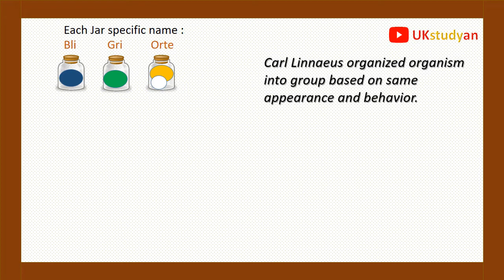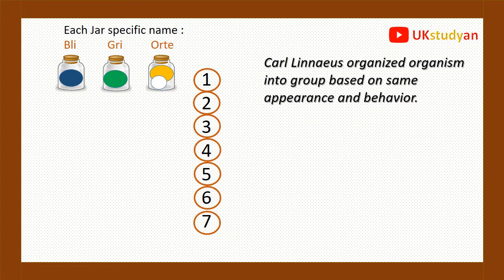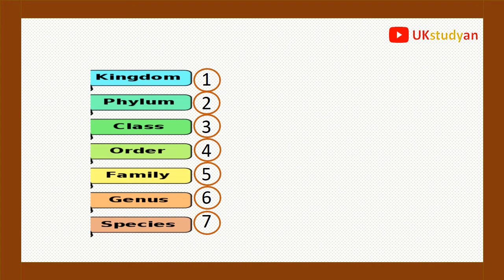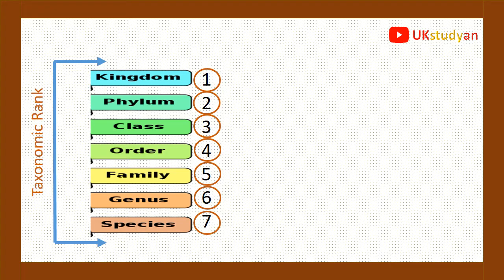In some cases the appearance was different but the behavior, like bouncing capacity, was the same. Carl Linnaeus got seven groups after organizing organisms, and to be more precise, he named those groups. The names are: kingdom, phylum, class, order, family, genus, and species. These groups are also known as taxonomic ranks.